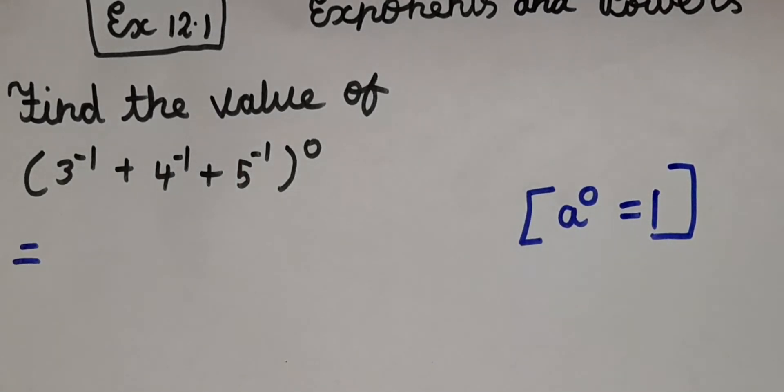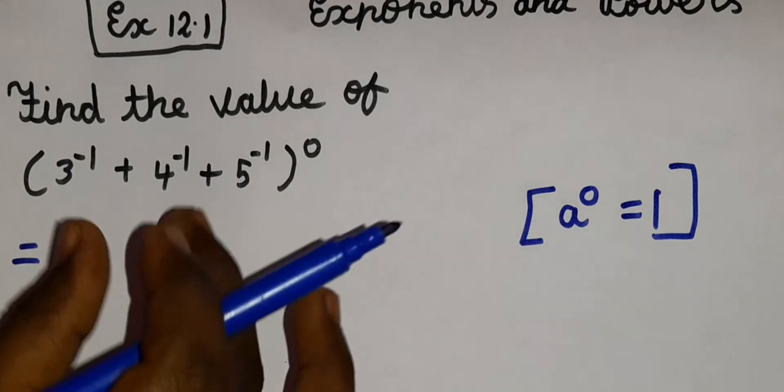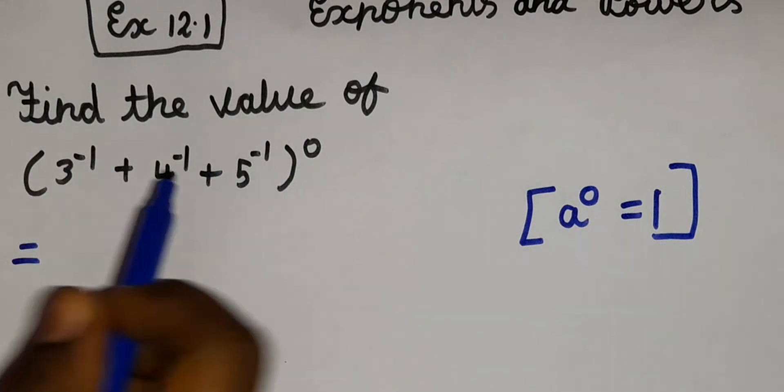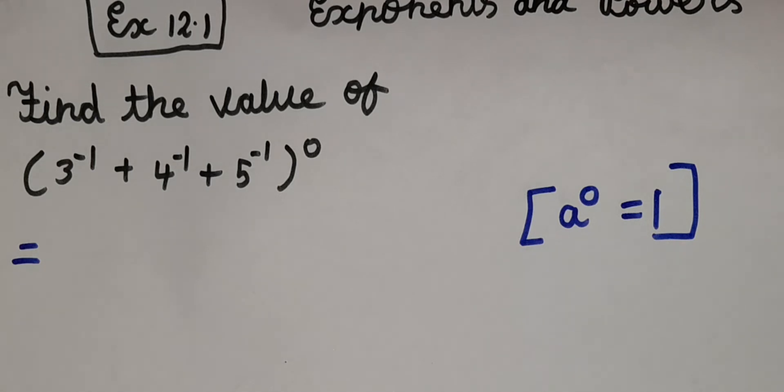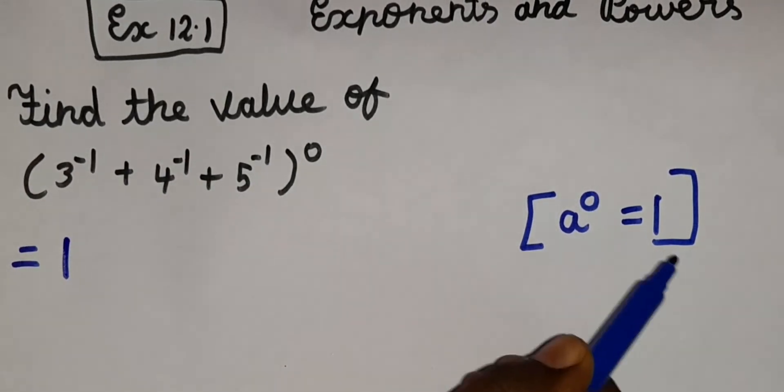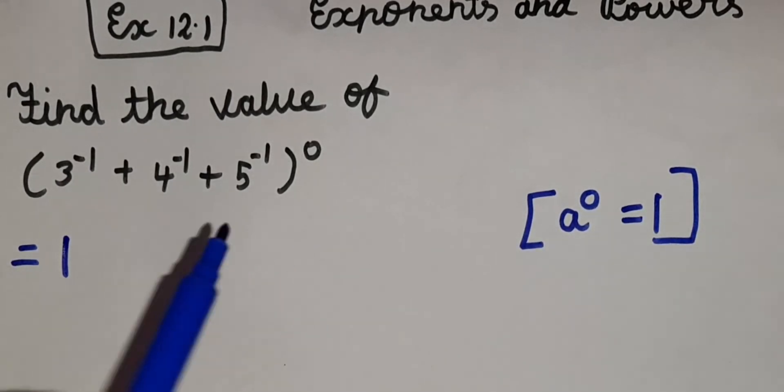So a to the whole power 0 also means the answer is 1. Which means here, the whole power includes all these 3 numbers. So the whole power 0 means our answer is of course 1. According to this rule, please remember this rule.